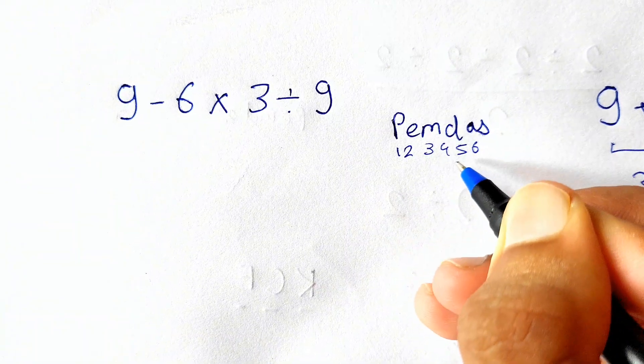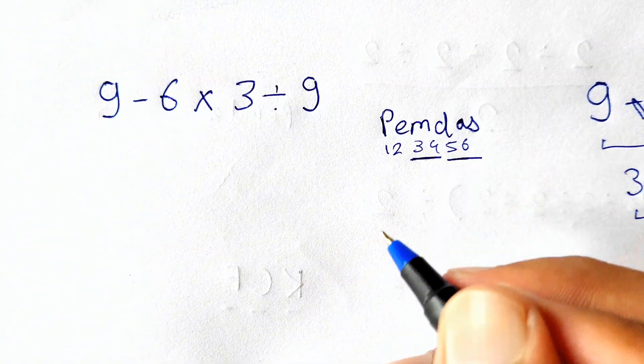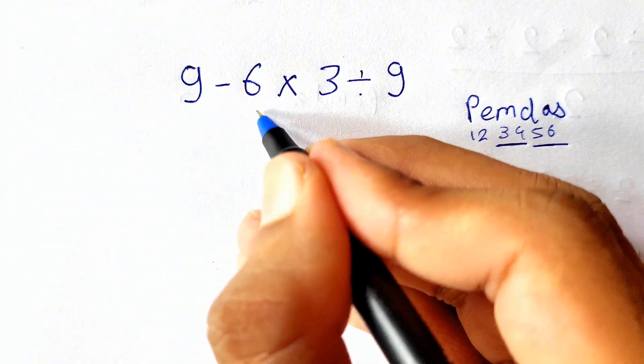In which the priority of multiplication and division is the same, and addition and subtraction is the same, but we need to go in order from left to right. So in this expression we can see there is multiplication, so we need to